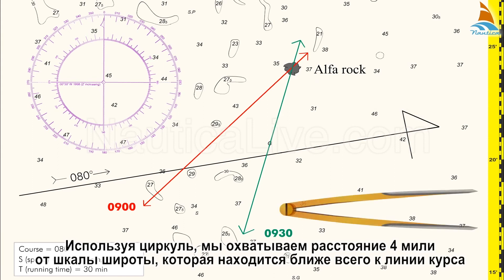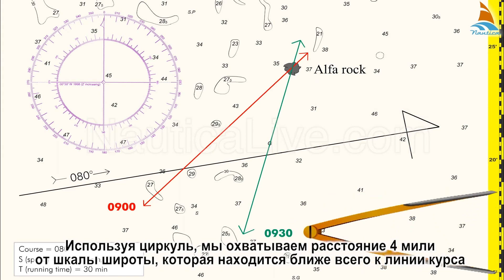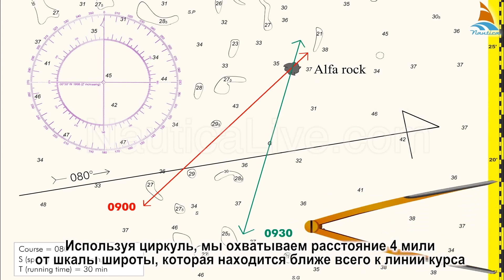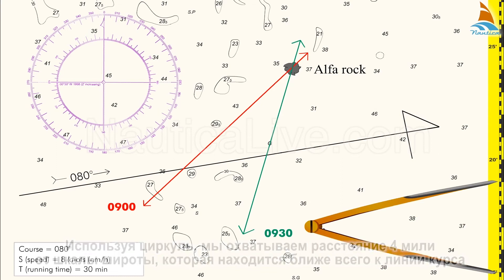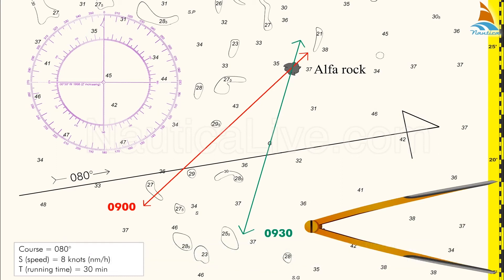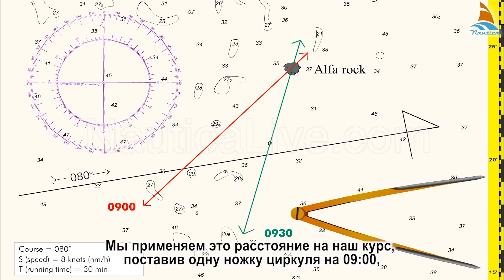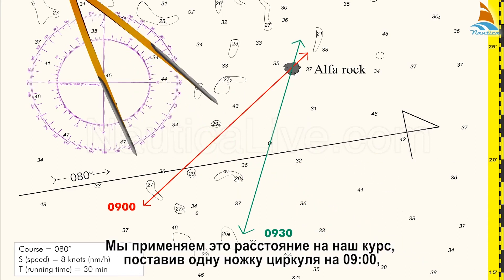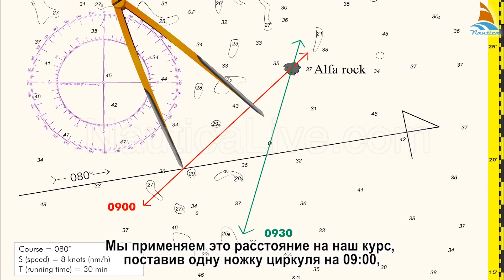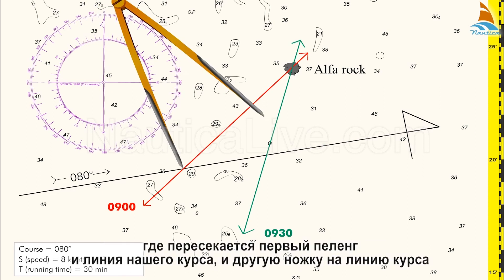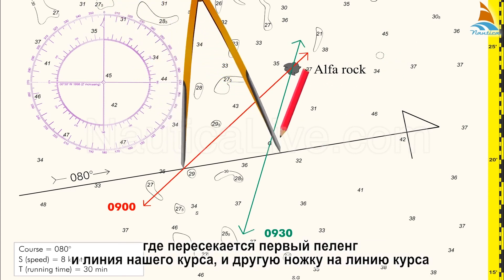Using the dividers, we span a distance of 4 miles on the latitude scale which is closest to the course line and which runs along the sides of the chart. We apply this span on our course, placing one leg of the dividers on the 0900 LOP intercepting the course and the other leg on the course line.